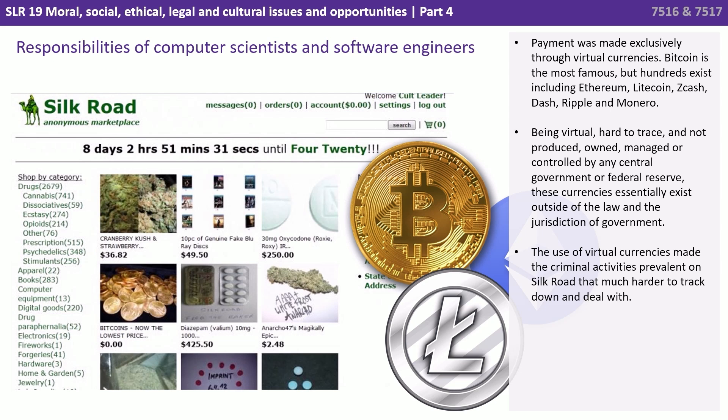Payment was made exclusively through virtual currencies. Being virtual, hard to trace, and not produced, owned, managed, or controlled by any central government or federal reserve, these currencies essentially exist outside of the law and the jurisdiction of government. The use of virtual currencies made the criminal activities prevalent on Silk Road that much harder to track down and deal with.